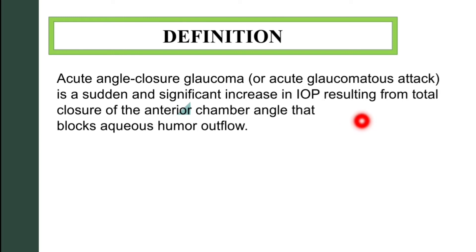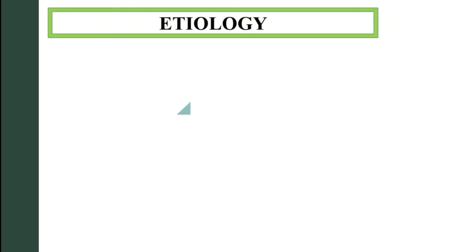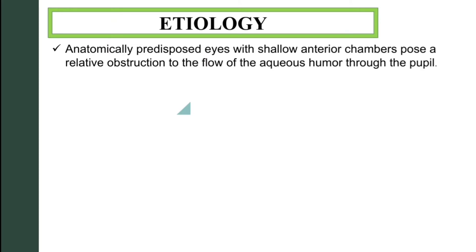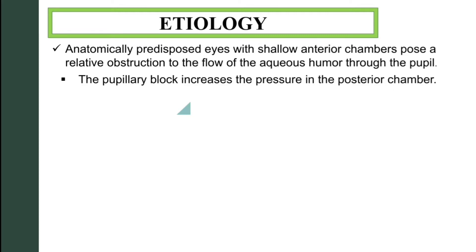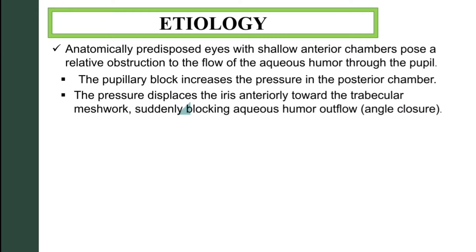Acute angle closure glaucoma, or acute glaucomatous attack, is a sudden and significant increase in intraocular pressure resulting from total closure of the anterior chamber angle that blocks aqueous humor outflow. An anatomically predisposed eye with a shallow anterior chamber poses a relative obstruction of the flow of aqueous humor through the pupil. The pupillary block increases pressure in the posterior chamber and displaces the iris anteriorly towards the trabecular meshwork.